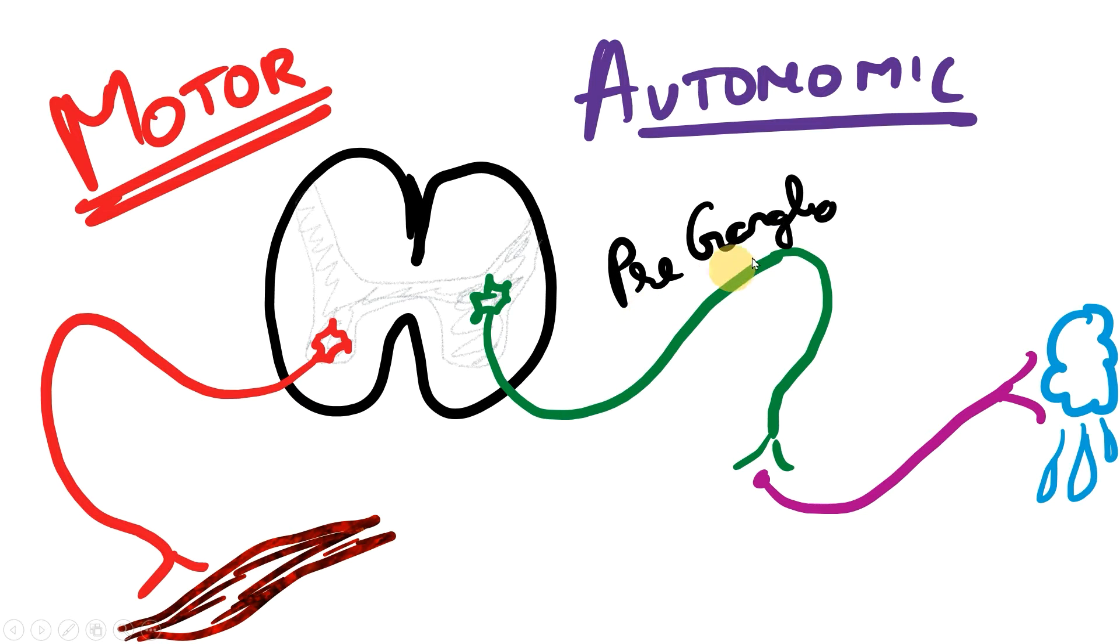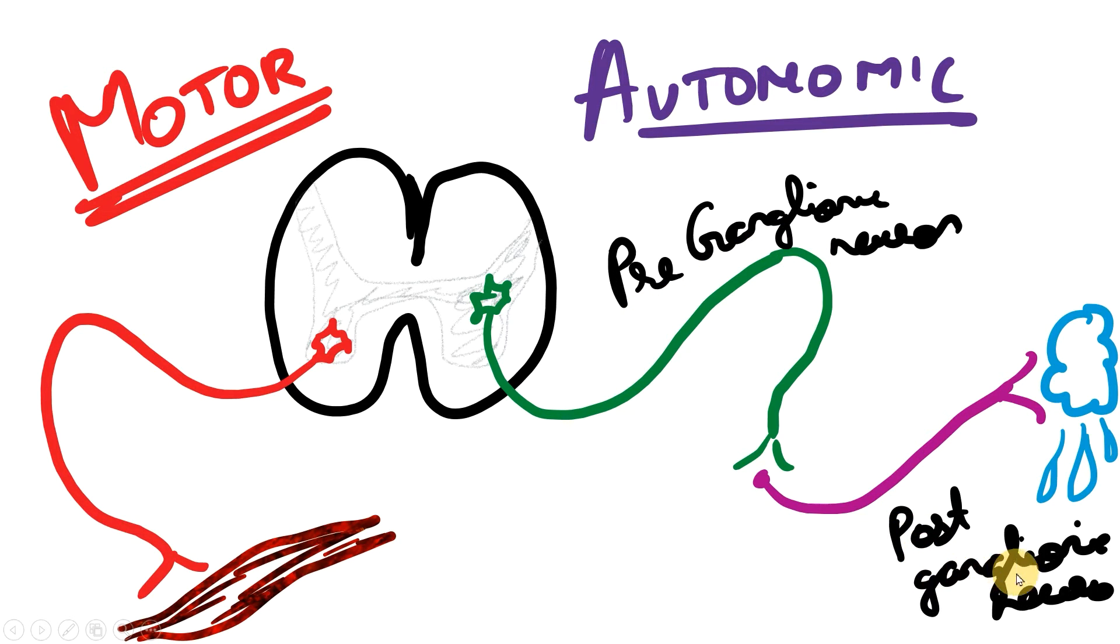The first neuron is called a pre-ganglionic neuron and the second neuron is called a post-ganglionic neuron. And you guessed it right, this is called a ganglia. Now, what is a ganglion? Ganglion is a collection of cell bodies. You are seeing this purple neuron and you are seeing its cell body over here. Just like this, you have hundreds of cell bodies of neuron in this location and that is called a ganglion. The word actually means knot.